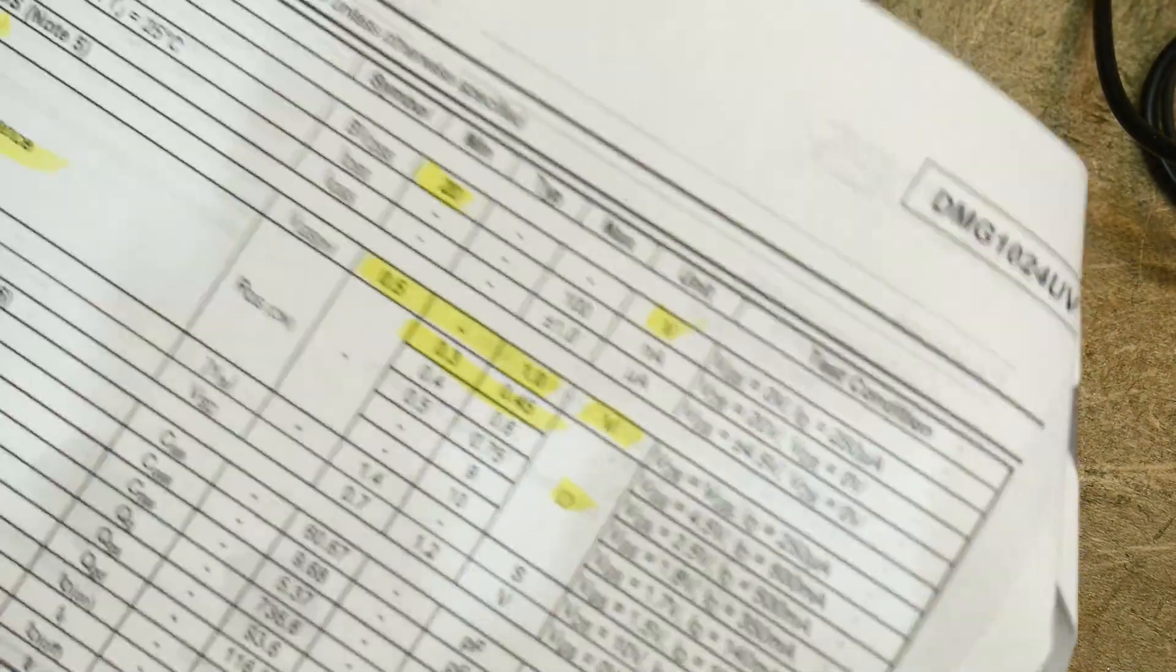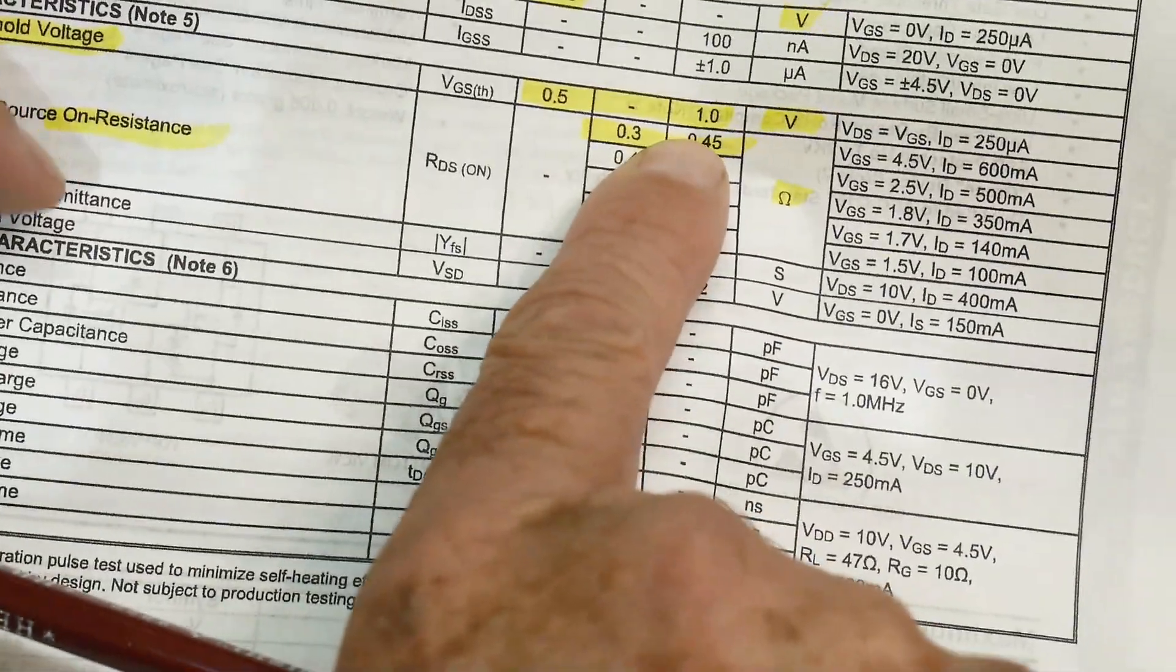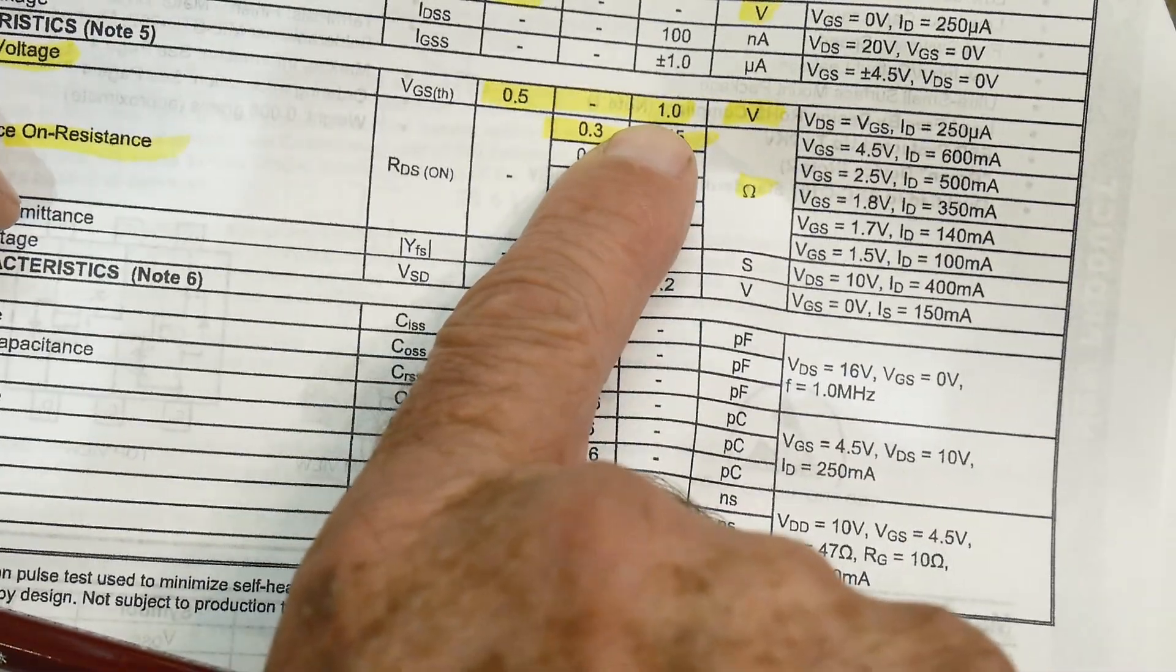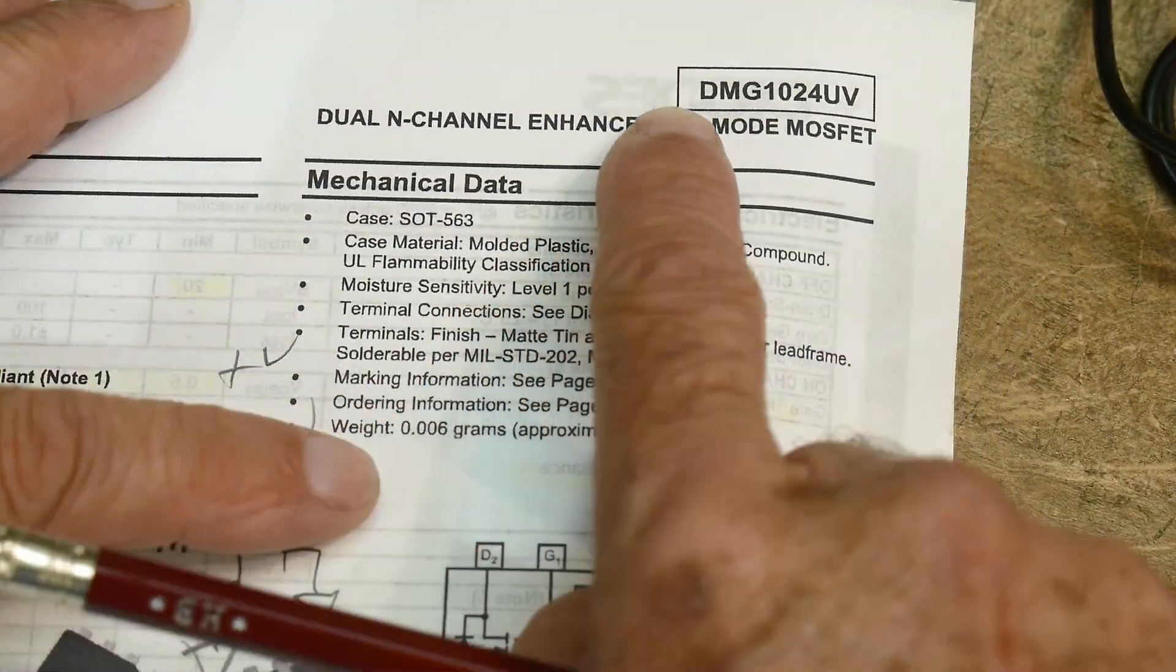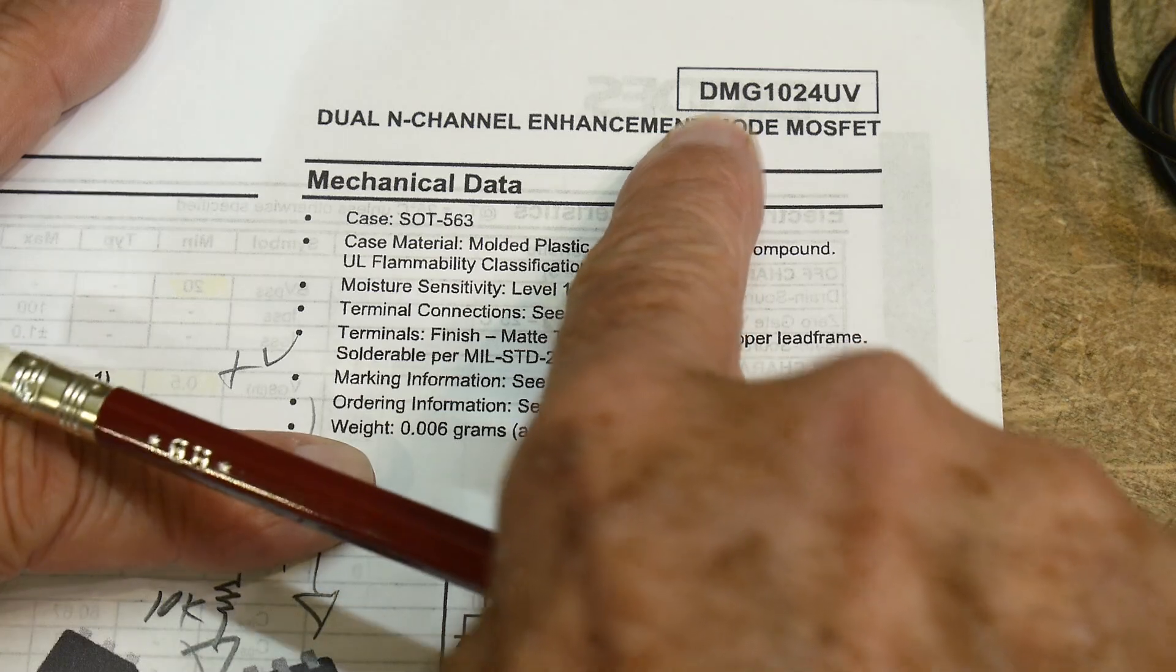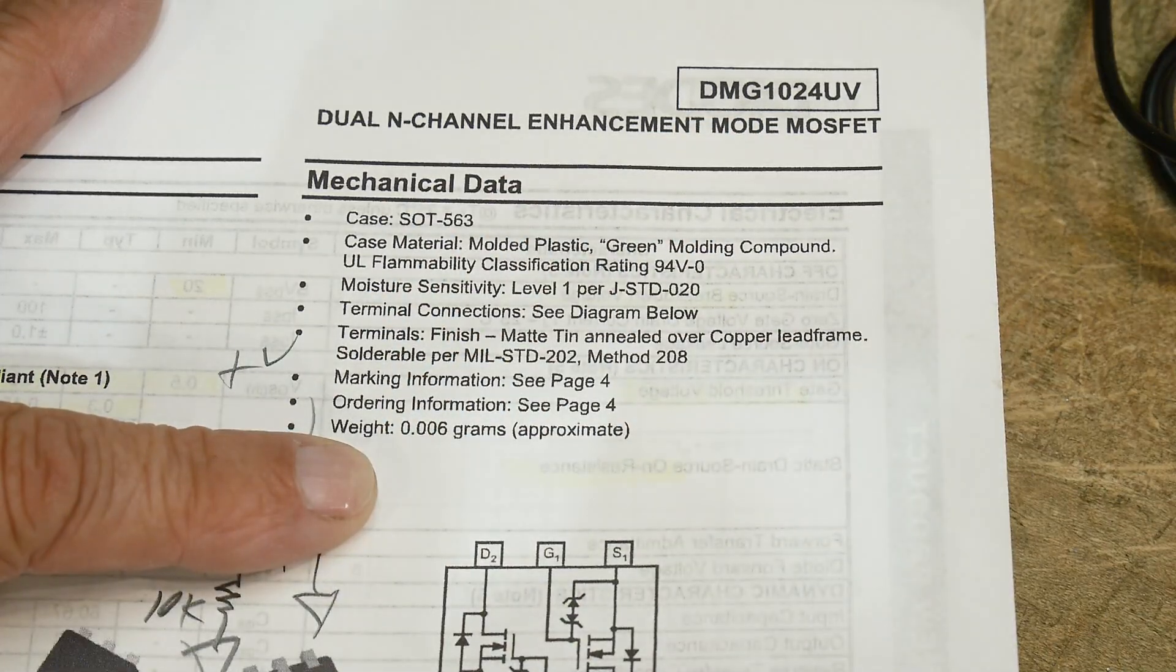Now how much do you need on the gate to make it operate? Well, that's the threshold voltage, and we saw that here. So as long as it's bigger than a volt, you're good to go. All right, well that was tip of the day, a DMG1024UVE. Nice little part.